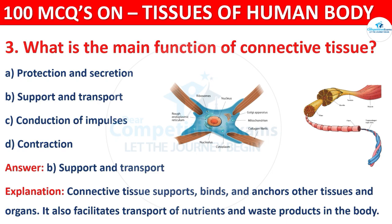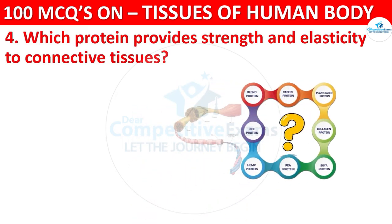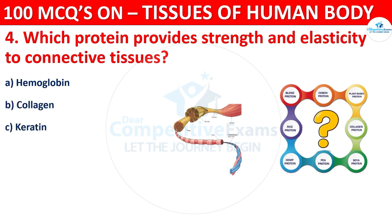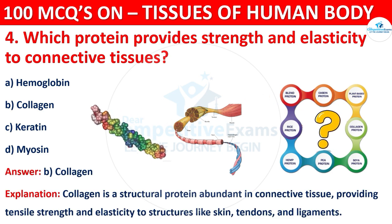Question number four: which protein provides strength and elasticity to connective tissues? Your options are hemoglobin, collagen, keratin, or myosin. The correct answer is B, that is collagen. Collagen is a structural protein abundant in connective tissue, providing tensile strength and elasticity to structures like skin, tendons, and ligaments.